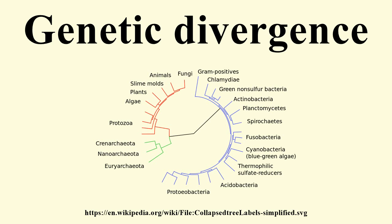The genetic differences among divergent populations can involve silent mutations or give rise to significant morphological and/or physiological changes. On a molecular genetics level, genetic divergence is due to changes in a small number of genes in a species, resulting in speciation.